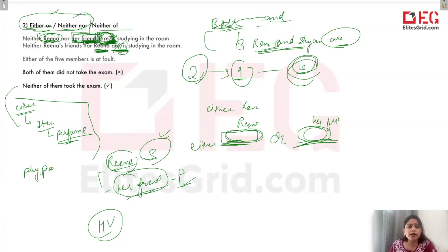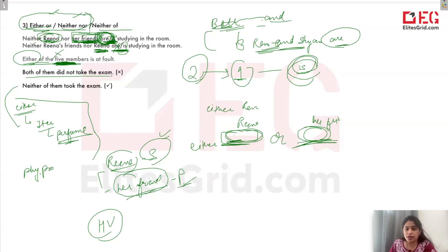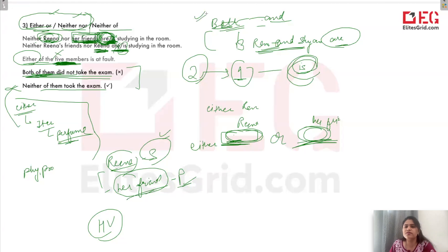Another thing: 'Both of them did not take the exam' — jab dono cheezohn ka negative bata rahe ho, toh 'both' nahi aata. This sentence is not right. Ham bolenge: 'Neither of them took the exam.' So 'both' dono cheezohn ka positive ke liye use kar sakte ho, but dono cheezohn ka negative ke liye 'both' commonly use nahi hota. So 'neither' use karna chahiye. This is another thing you should keep in mind.